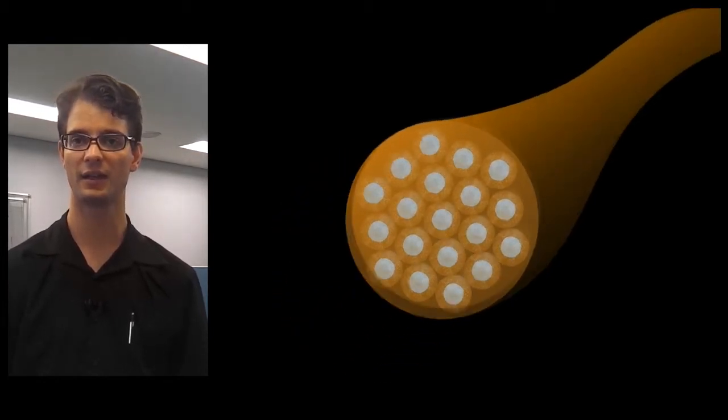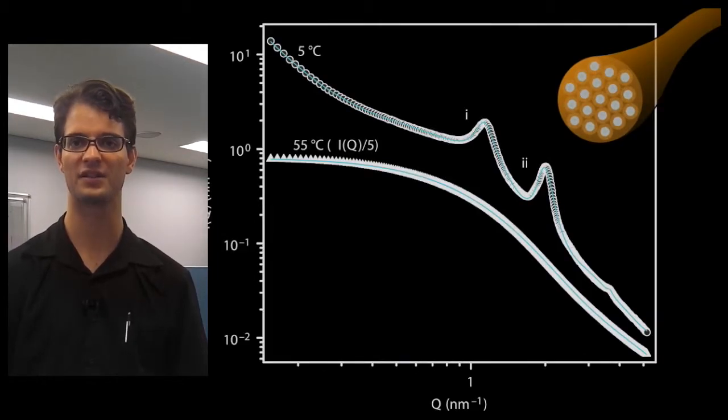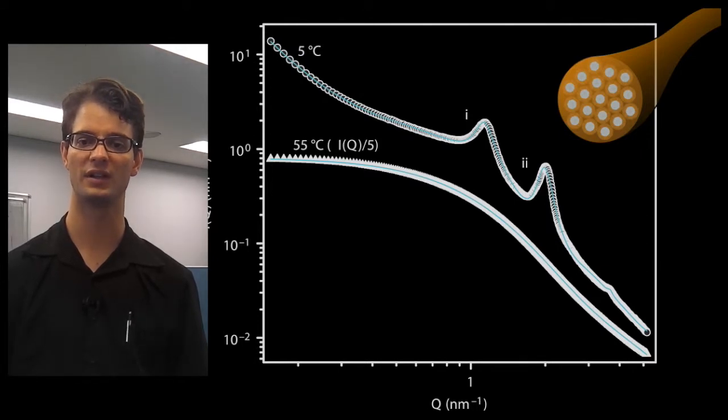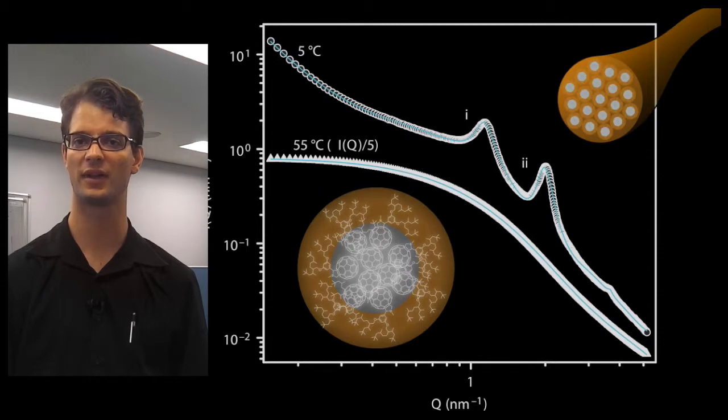The hexagonal structure of this packing can be investigated using small angle X-ray scattering, where we see, at low temperatures, the peaks associated with hexagonal packing. At higher temperatures, we see that these peaks are no longer present, which may indicate that the material has reverted to a normal core-shell micelle.